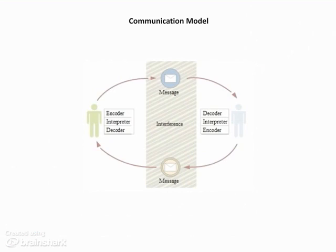In the basic model of communication, person A and person B — the sender and receiver, here called encoder, interpreter, decoder, and decoder, interpreter, encoder — both send and receive messages simultaneously. Stimulus and motivation are two requirements that trigger a sender to send a message, and the coding process explains these encoder and decoder labels.